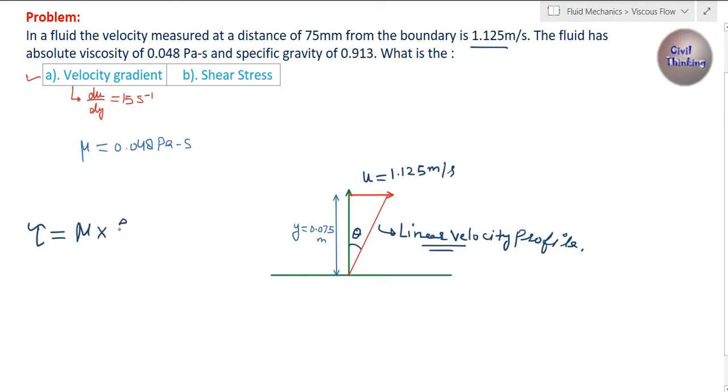According to Newton's law of viscosity, shear stress denoted by tau equals mu multiplied by the velocity gradient du/dy. This is the dynamic viscosity, 0.048 Pascal second, multiplied by du/dy, which is 15 per second. Second and per second cancel out, so we are only left with pascals, which is 0.72 pascals.